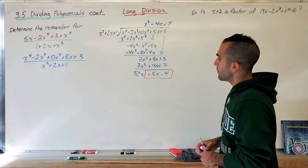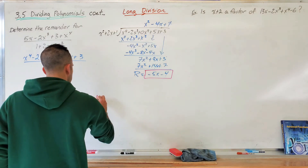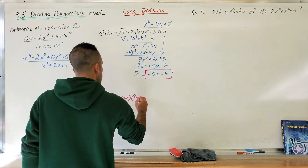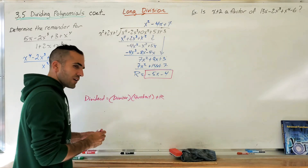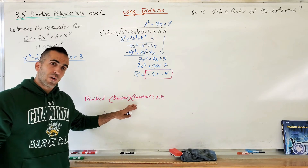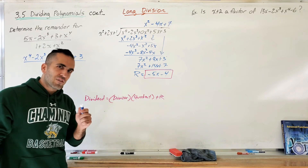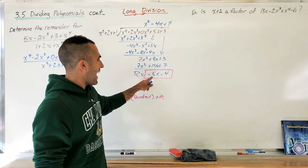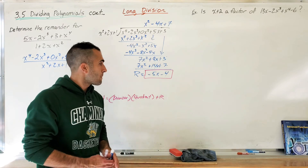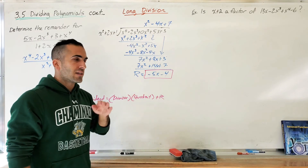The remainder is negative 5x minus 4. Recall the division statement: dividend equals divisor times quotient plus remainder. If I break down the dividend into divisor times quotient with no remainder to add, that's factored form. If there's no remainder, the polynomial is factorable and whatever I divided by is a factor. But when I have a remainder like negative 5x minus 4, it's not factored form anymore. So if I have a remainder, whatever I divided by is not a factor of that polynomial — that will come in handy later.